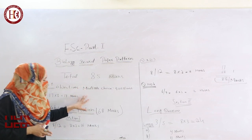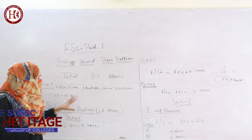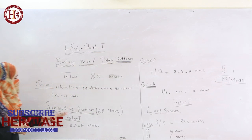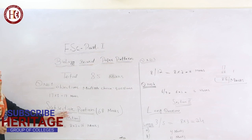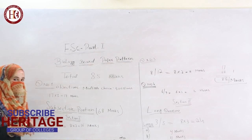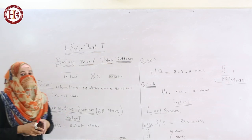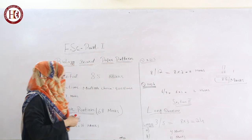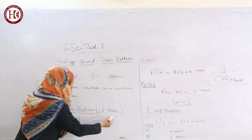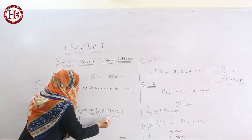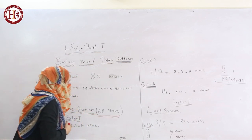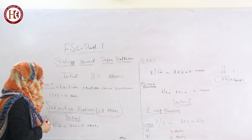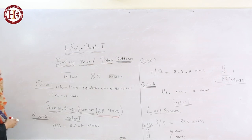After solving the Objective Portion, you move to the next portion, which is the Subjective Portion. The Subjective Portion consists of 68 marks.